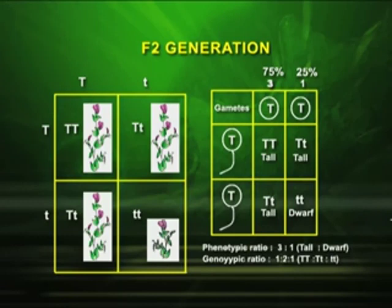Now let us see what happened when he raised the F2 generation. In F2, he obtained tall and dwarf plants in the ratio 3:1. But here the genotype — you get two types. For the tall plant: one is capital T, capital T, and another is capital T, small t.